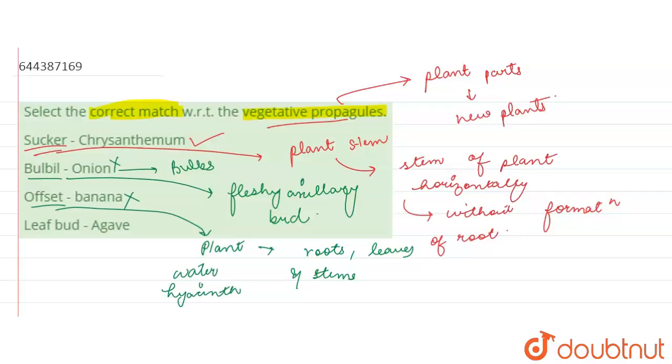Last says leaf bud in agave. Now agaves have vegetative propagules in the form of bulbils, which we have already seen here are fleshy axillary bud. Leaf buds are not seen in agave, so again this will be the wrong pair. The correct answer is sucker in chrysanthemum. Thank you.